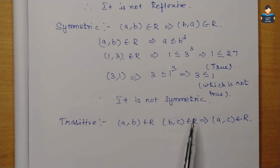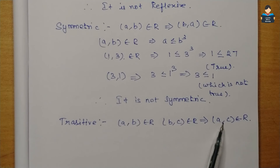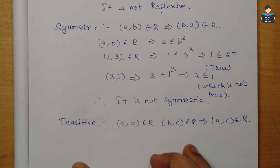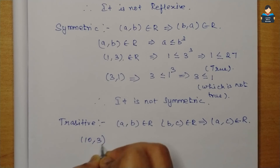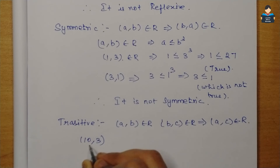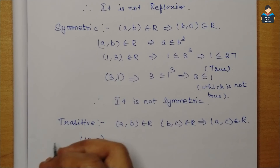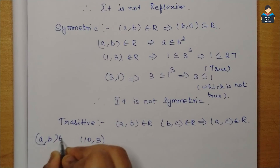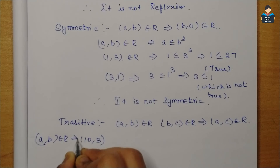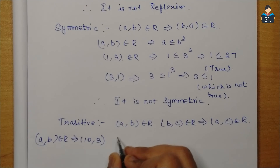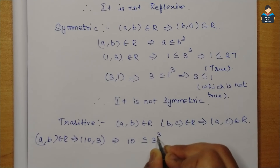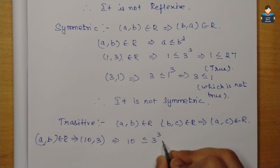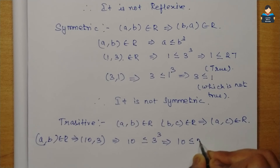So (a,b) belongs to R and (b,c) belongs to R implies (a,c) should belong to R. We check with an example: take a=3, b=2, c=2. Check (3,2): 3 ≤ 2³ means 3 ≤ 8 — condition satisfied, true.